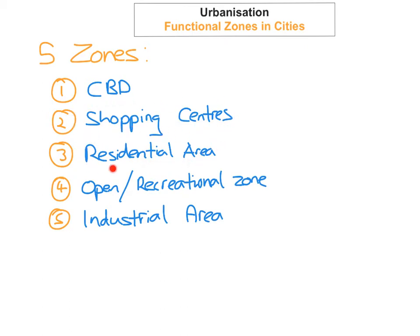Another function you'll find in a city is the residential function — this is basically areas where people will actually live. You can have three different types of residential areas. The first is the old inner city, with multi-storey and terraced buildings, right in the middle of the city centre. Then you can have the new inner city multi-storey buildings, which have been redeveloped — these will usually be apartments. An example of this could be the Smithfield complex in Dublin city centre.